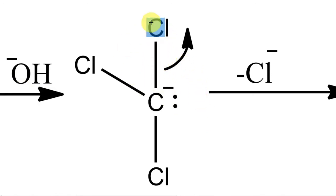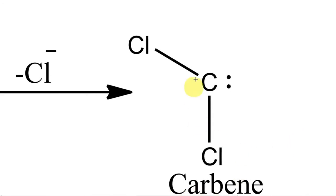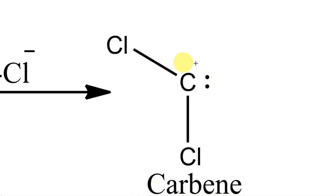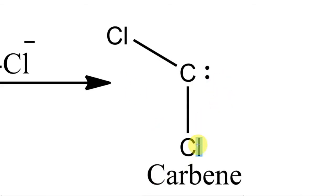Chlorine is a good leaving group, so Cl⁻ leaves from this negatively charged species. As Cl⁻ leaves, the species becomes neutral — this is the carbene. This carbon has six electrons around it: two electrons in one bond, two in another, and two other electrons — total six. The carbon is not an octet; this carbene is electron deficient, a highly reactive intermediate, and it will react with the aromatic ring — phenol.